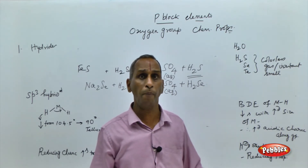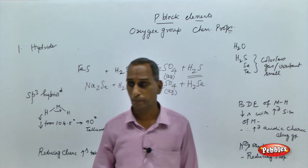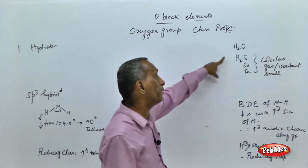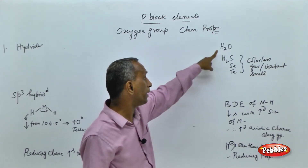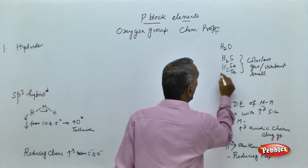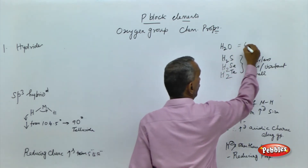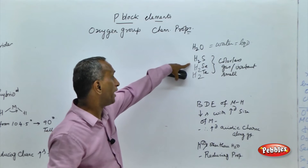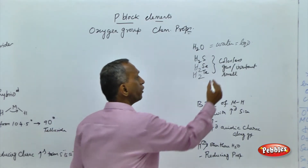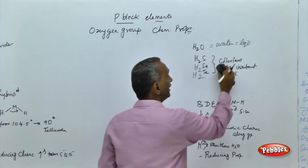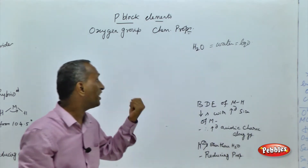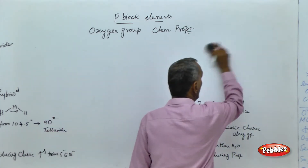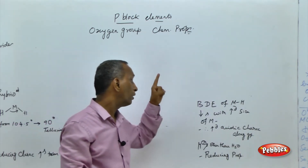Now, important properties of hydrides of oxygen group elements. The hydrides are water, hydrogen sulfide, hydrogen selenide, and hydrogen telluride. Water exists in liquid state. All other hydrides — hydrogen sulfide, hydrogen selenide, and hydrogen telluride — are colorless gases noted for their irritant smell, the sulfide smell, which causes irritation when accidentally inhaled.